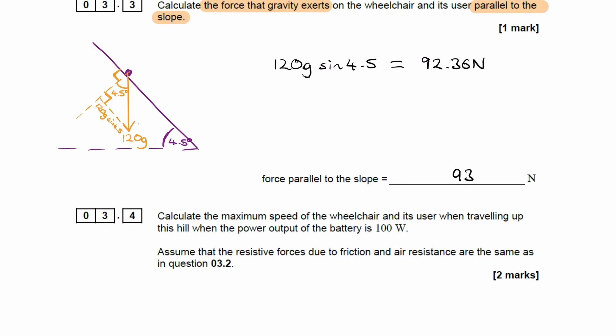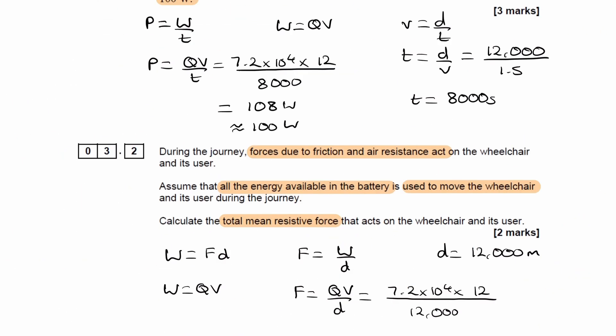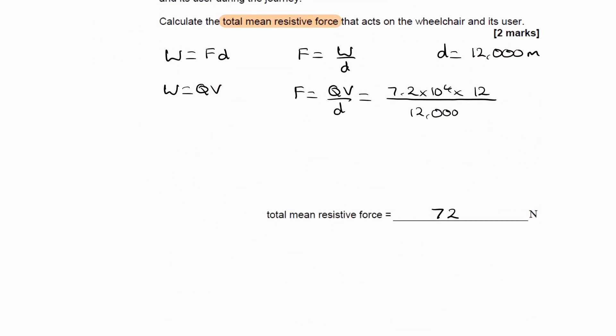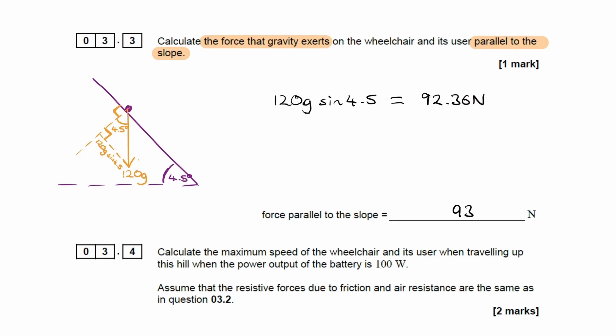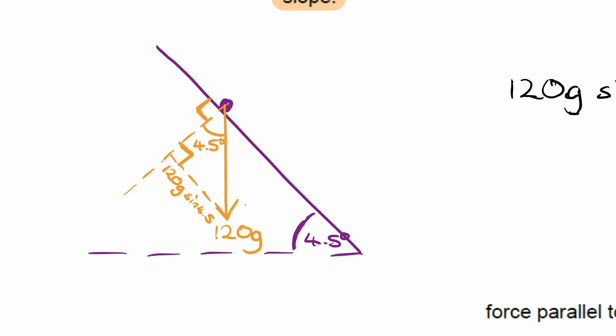I'm going to add the resistive force that we worked out. The resistive force was 72 newtons acting against motion, going in this direction. We also have a driving force going up the slope, call that D. We have a normal contact force as well, but we're not going to consider that for this question.